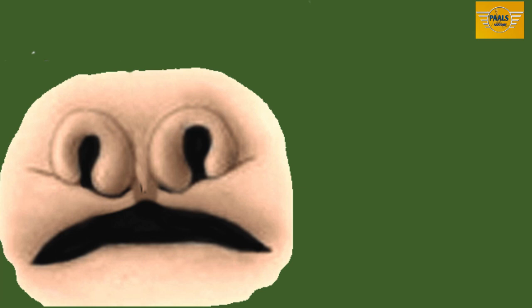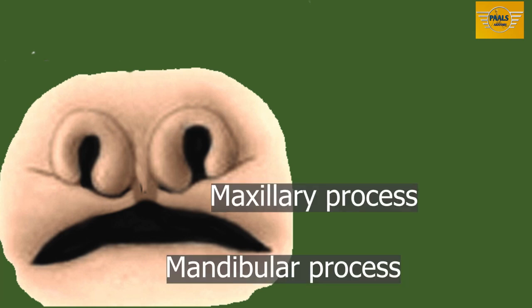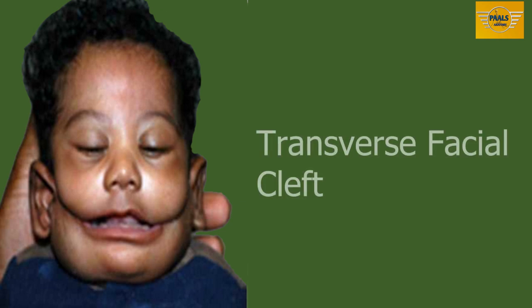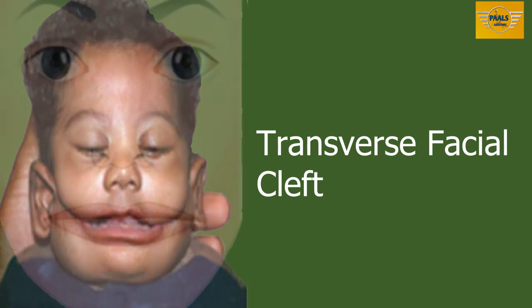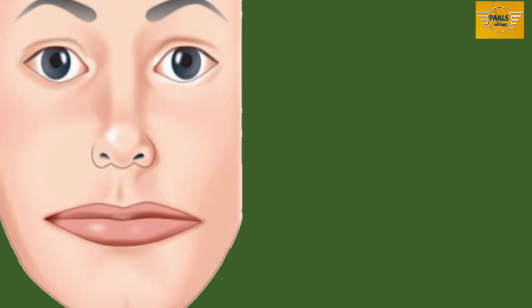Next, we'll look at the fusion between the maxillary process and mandibular process. We said in part 1 of this video that fusion of these two processes gives rise to the cheek. When these two processes refuse to fuse, it leads to a defect called the transverse facial cleft, which shows a cleft running from the angle of the mouth to the ear. Sometimes this fusion can occur but will not be adequate, and when this happens it results in a condition known as macrostomia.